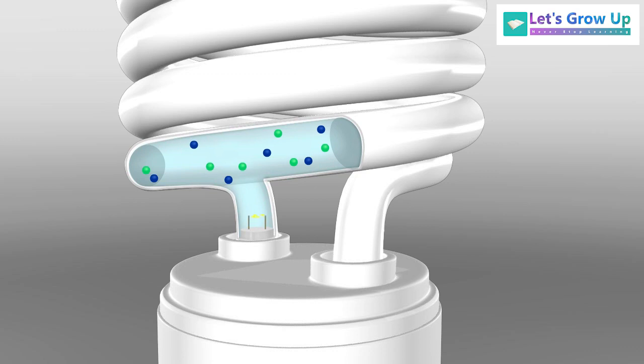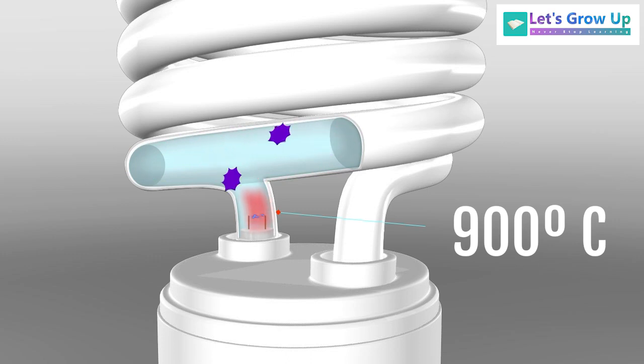Electric current flows when the electricity is passed through a filament, which is usually made of tungsten of electrodes. The temperature rises about 900 degrees Celsius. These accelerated electrons strike mercury and argon atoms which arise from low temperature plasma.